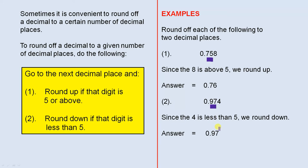So since the 4 is less than 5, we round down. Rounding down means you just keep that the same. You do not increase the 7. So the answer is 0.97.